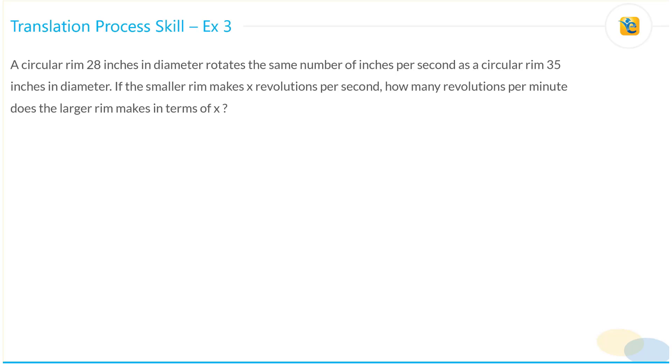Let's solve this question. A circular rim 28 inches in diameter rotates the same number of inches per second as a circular rim 35 inches in diameter. So far what you know is that there are two rims and they rotate the same number of inches per second.